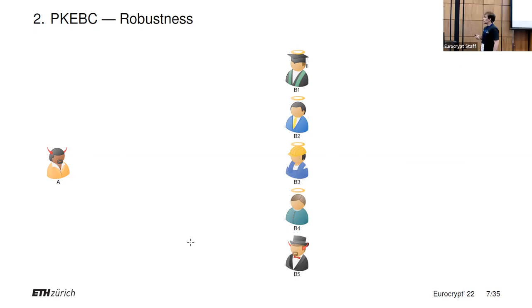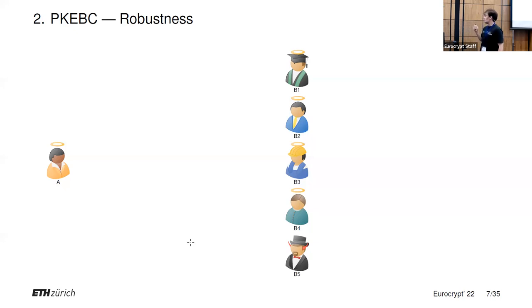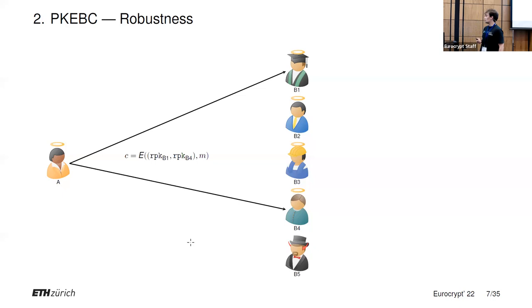There is also robustness, which considers an honest sender and honest receivers. This is similar to the robustness notion for normal PKE schemes, only adapted for PKE-BC. Basically, if Alice sends a message to, say, B1 and B4, B1 would still decrypt it normally. But if for some reason B3 also gets this ciphertext, when he tries to decrypt it, he will not get anything.